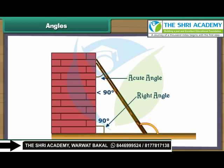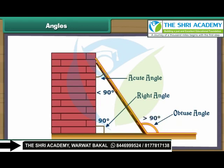Now let us look at the third angle that the ladder makes with the ground. We take the ground as the base. The ladder is not vertical — it is tilted out. Such an angle is called an obtuse angle and its measure is more than 90 degrees.